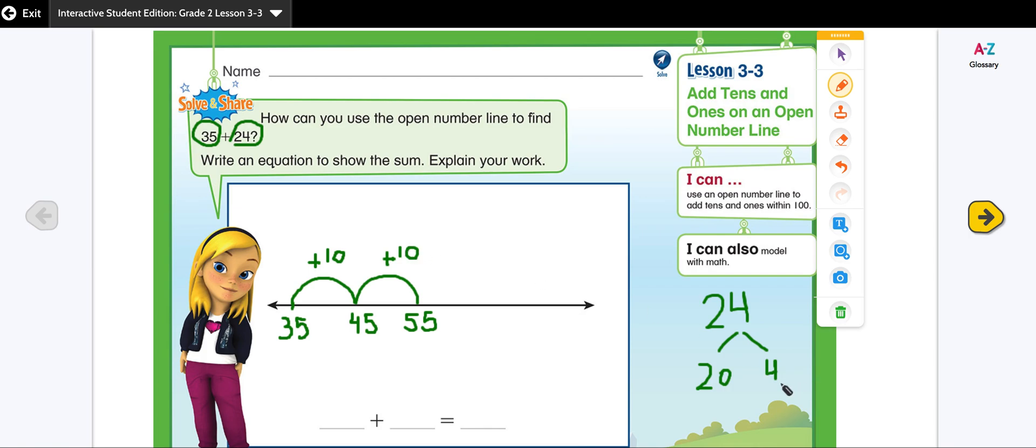My ones are four. So I can make four smaller jumps. One, two, three, four.